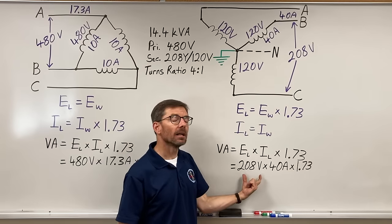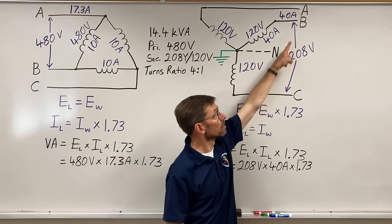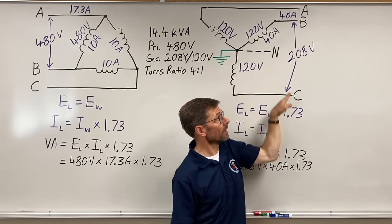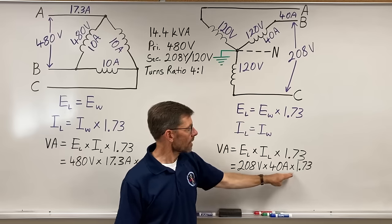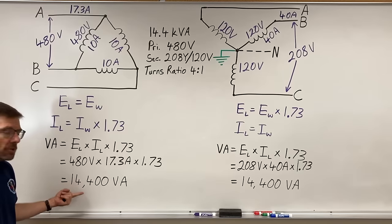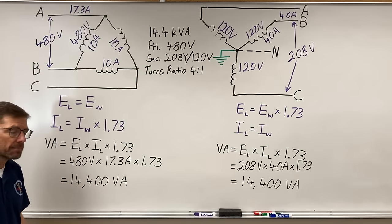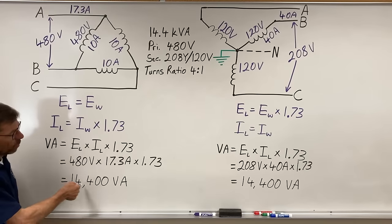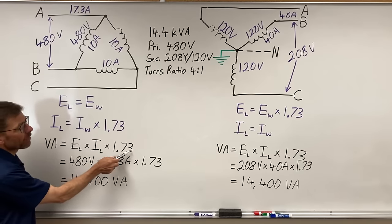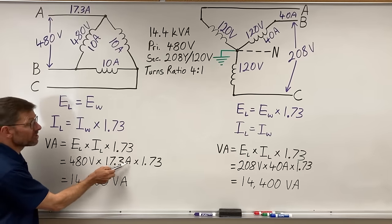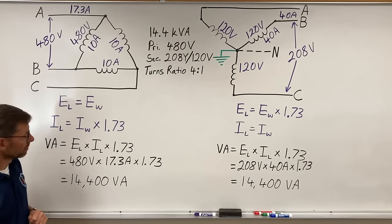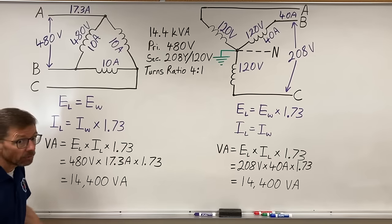So in the Y, I pick the line voltage, the larger voltage, times line amperage. Same 40 and 40, but I take the number from the line. Times 1.73. And they both equal 14,400 volt amps. Or thereabouts. Within rounding. Because this is technically square root of 3. So it'd be 1.732. Or 17.32. So you'll be within rounding of 14,400 volt amps. And if I turn that into kilo volt amps, thousands of volt amps, well, it's 14.4 thousand. 14.4 kVA.